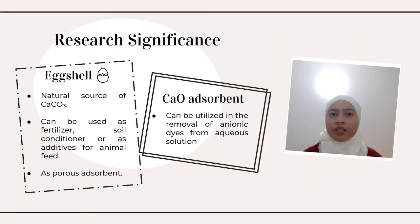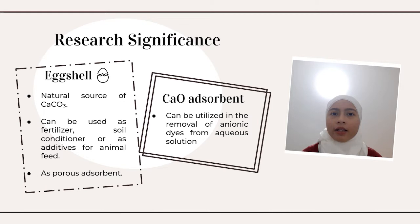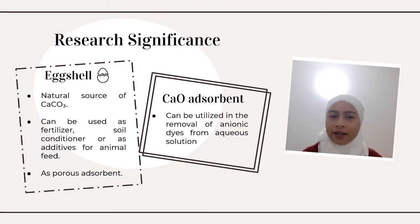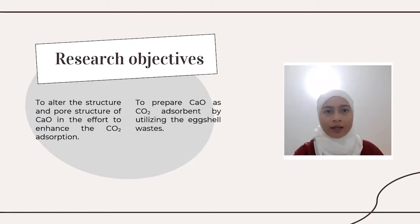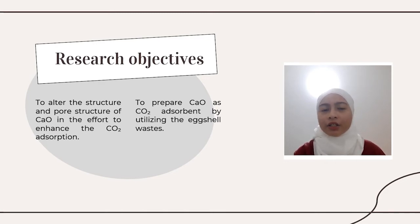Our project highlights eggshell waste as a natural source of calcium carbonate and other minerals, making it suitable for fertilizers, soil conditioner, and additives for animal feed. We can also obtain purified calcium oxide from this waste through the process of calcination. The unique pore structure of calcined eggshell makes it a great candidate as a porous absorbent, including for removal of anionic dyes from aqueous solution. The objectives are to prepare calcium oxide as a carbon dioxide adsorbent by utilizing eggshell waste and to alter the structure of calcium oxide to enhance carbon dioxide absorption.